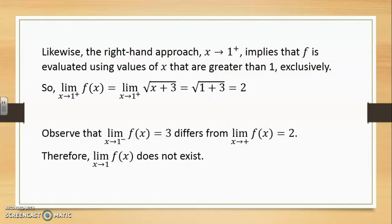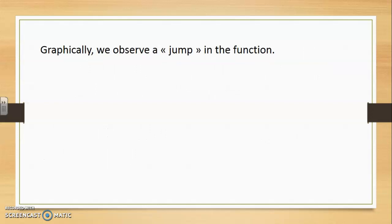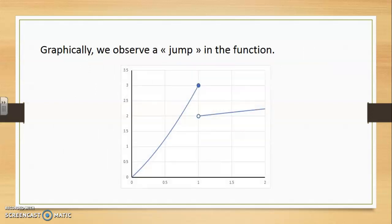Observe that the left-hand limit of the function as x approaches 1 is 3, which differs from the right-hand limit as x approaches 1 from the right, which is 2, and therefore the limit as x approaches 1 of f(x) does not exist. Graphically, what we observe is a jump in the function.